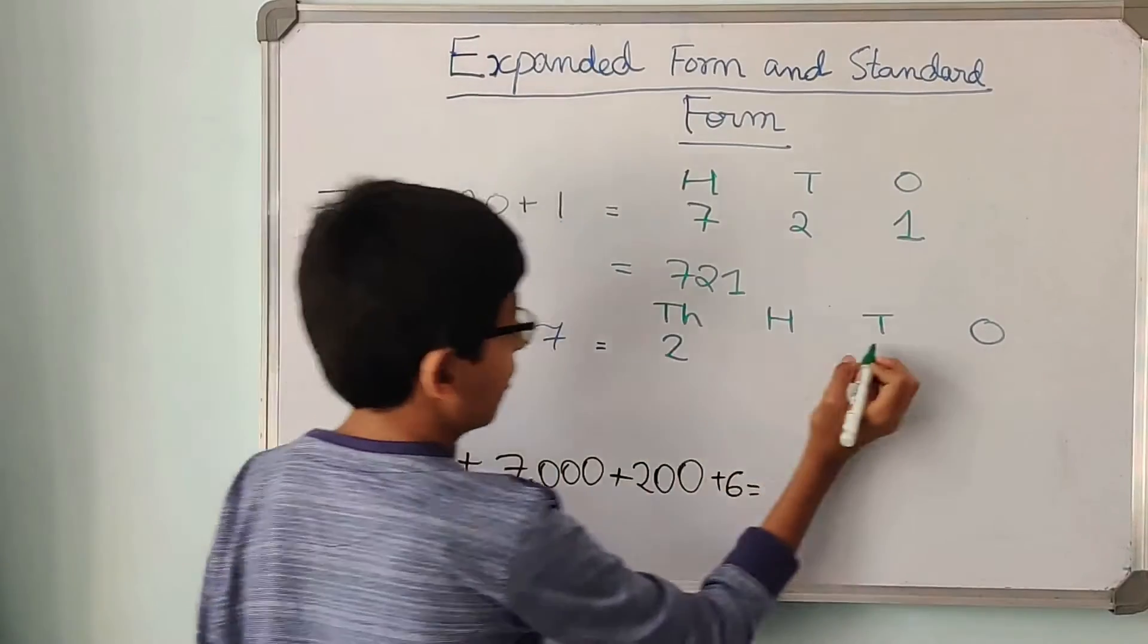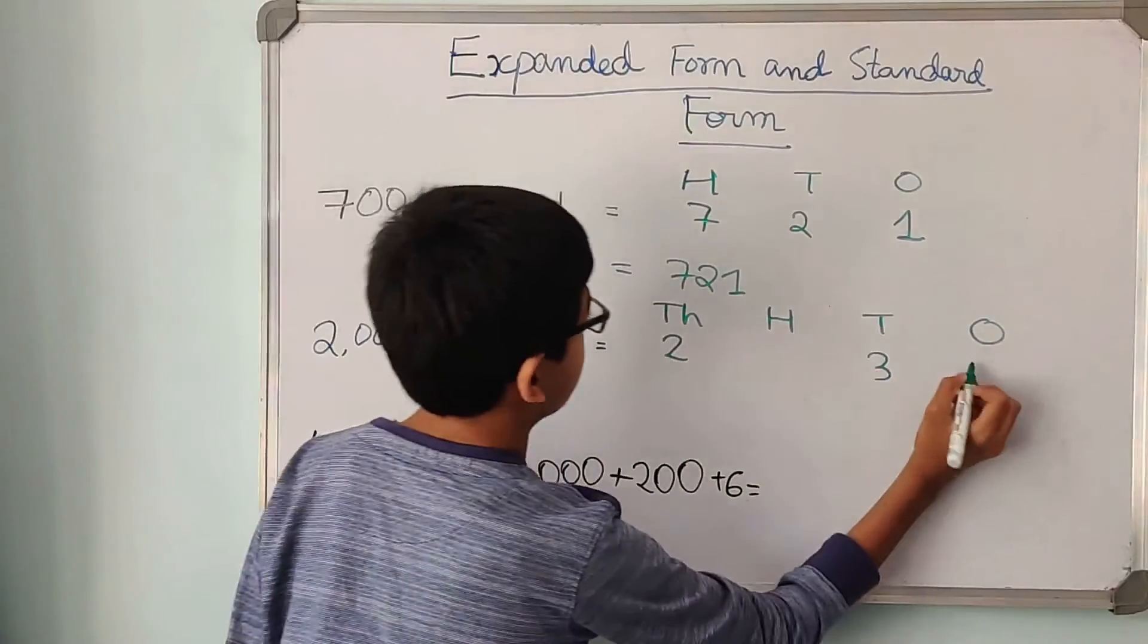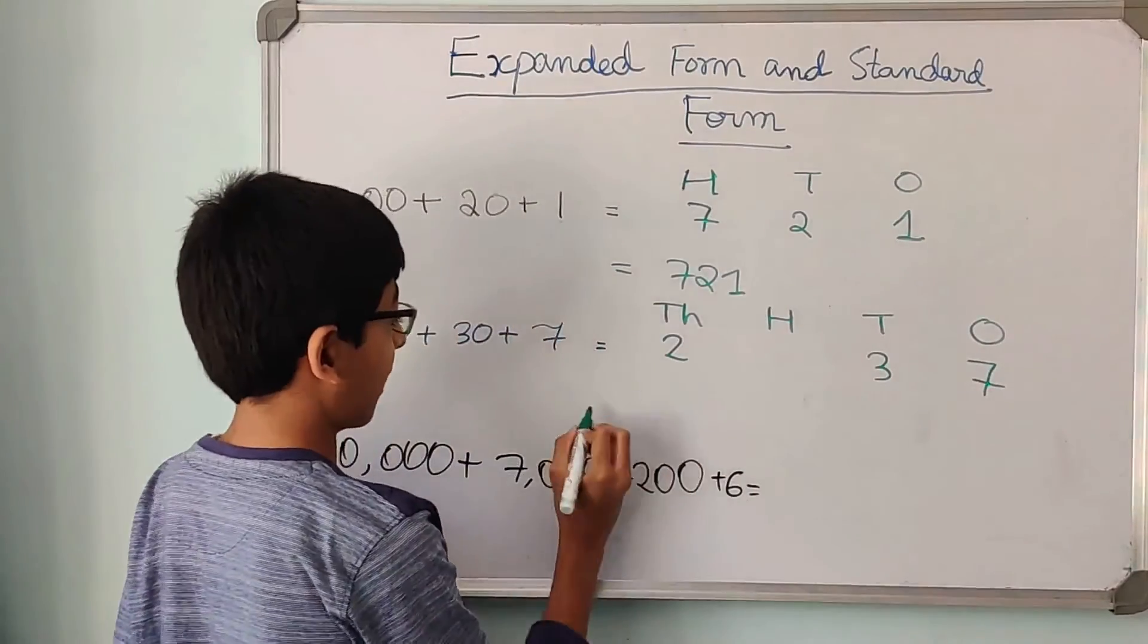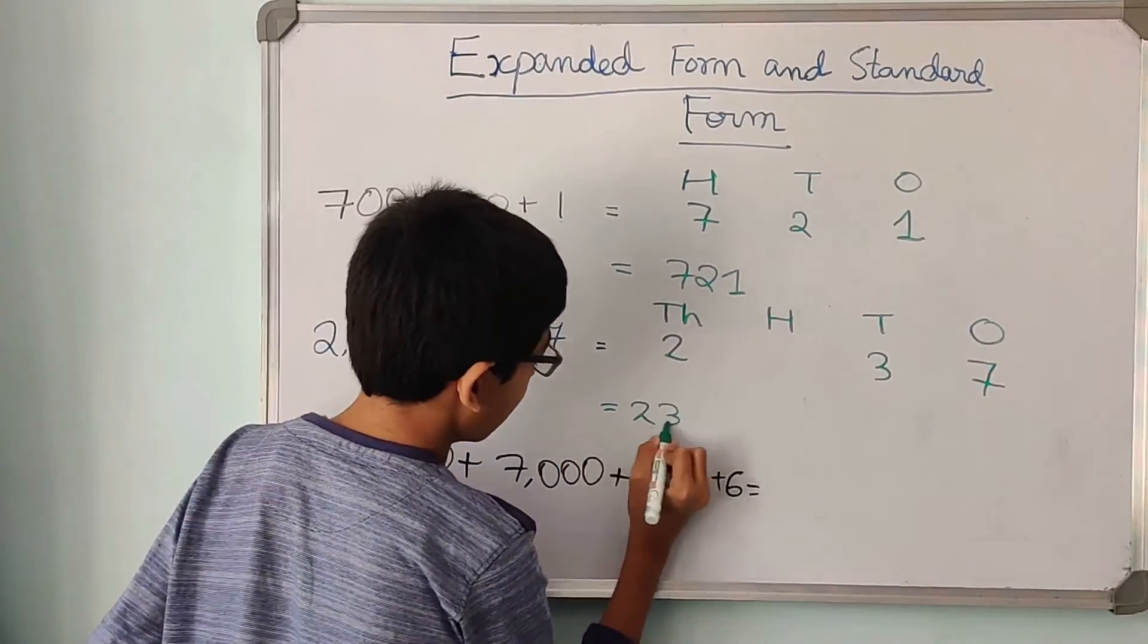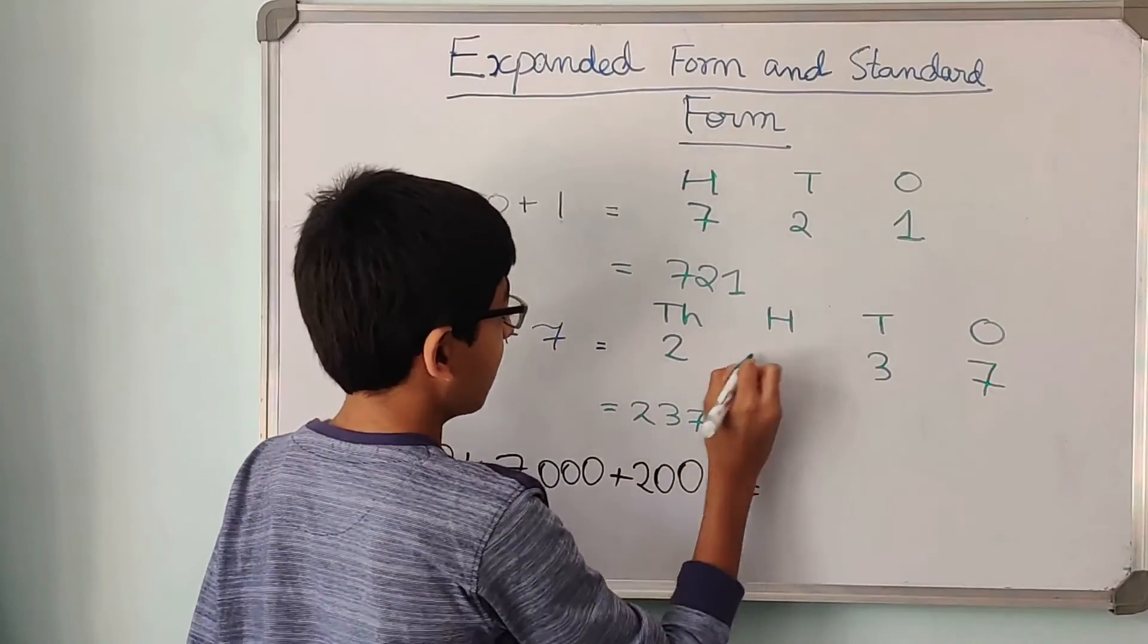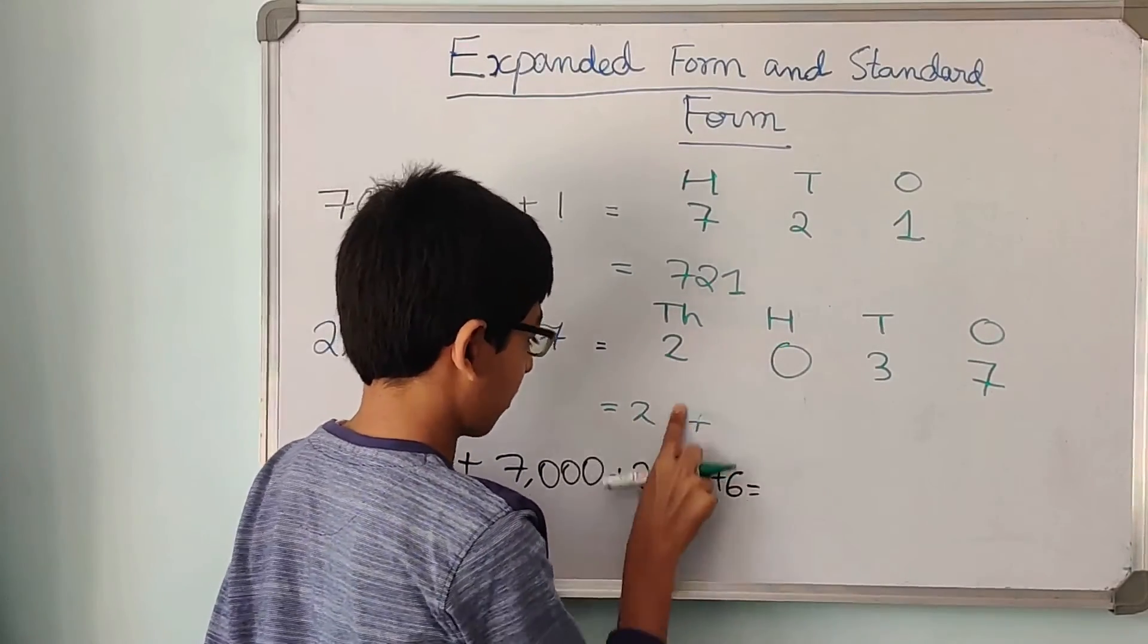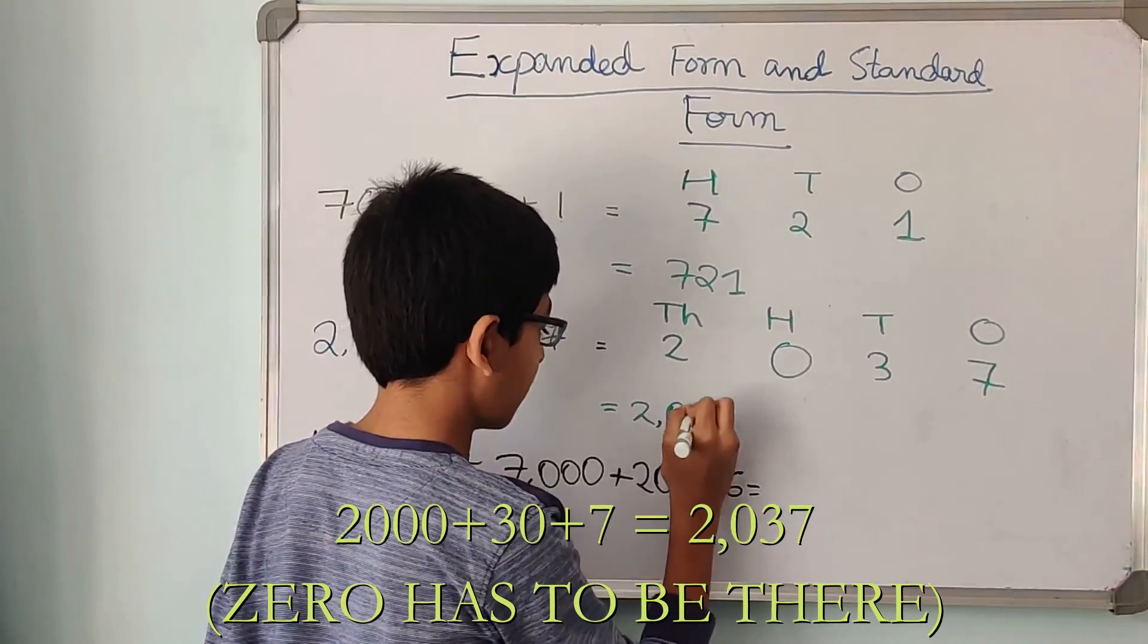30, ones and tens. So 3 would come in the tens place, and 7 would come in the ones place. So can we write this as 237? No, because in hundreds also is a place, and as over here there is nothing, we will just write a zero. And this is going to be 2037.